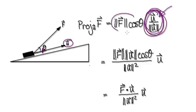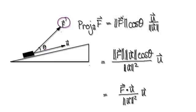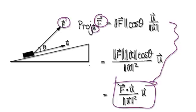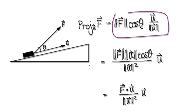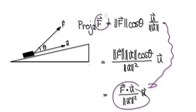This thing here is just a direction, and this thing here is a magnitude. So when you get the magnitude times the direction, it gives you this vector with the correct magnitude and the correct direction. So we project F onto U, and it's given by this formula. You can imagine this as being U, and it's going to be the magnitude of U squared. So projecting F onto U is given by this.